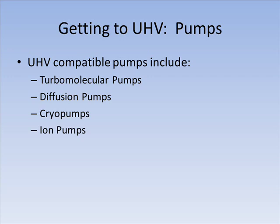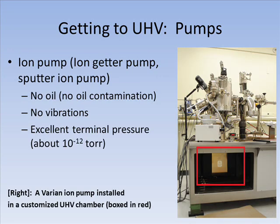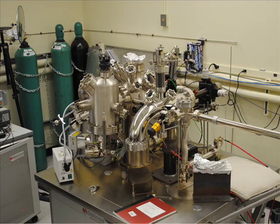A number of pumps can be used to get to the UHV regime, including turbomolecular pumps, diffusion pumps, cryopumps, and ion pumps. Each of these has different principles of operation and advantages and disadvantages. Many researchers consider the ion pump to be the real workhorse of a UHV system, because it introduces no oil contamination and has no moving parts, yet they're capable of attaining terminal pressures lower than 10 to the minus 11 torr in ideal conditions. Many different tools vacuum scientists become familiar with, and most systems are specialized to particular needs, but these videos will focus on showing general techniques useful to anyone new to working with vacuum systems.